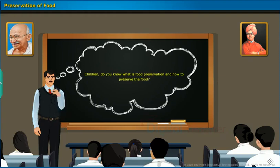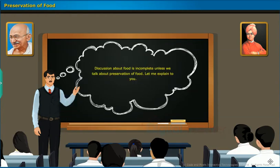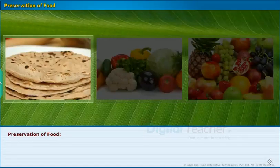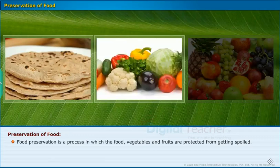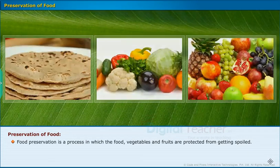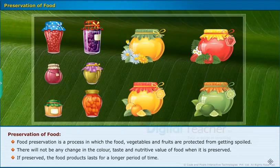Children, do you know what is food preservation and how to preserve the food? Discussion about food is incomplete unless we talk about preservation. Food preservation is a process in which food, vegetables and fruits are protected from getting spoiled. There will not be any change in the color, taste and nutritive value of food when it is preserved, and the food products last for a longer period of time.